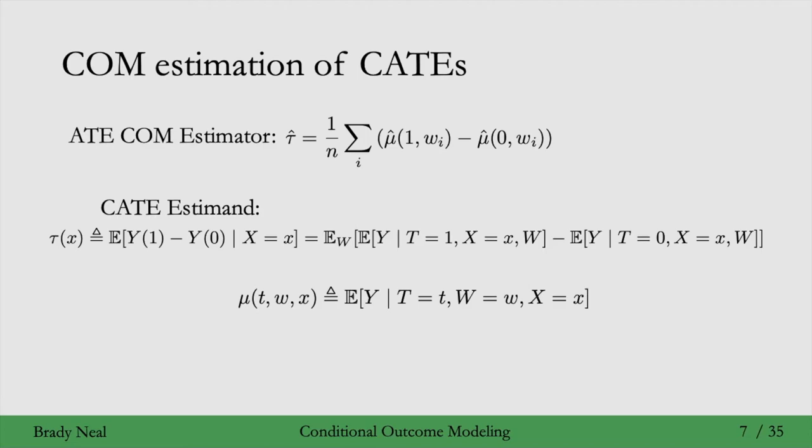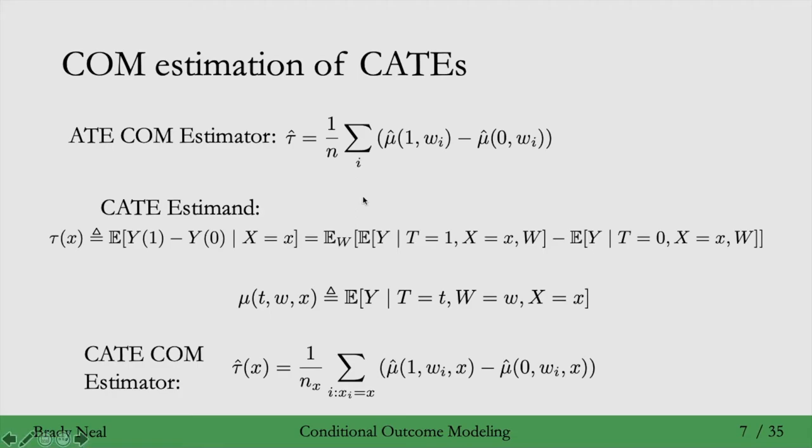we'll define a mu. This mu is almost the same as the mu we used in the last slide, but now it also takes x as input and corresponds to an estimate that is conditioning on x. Now we can get a COM estimator for the CATE that looks just like the COM estimator for the ATE, except now x is also an input to this model mu hat here.